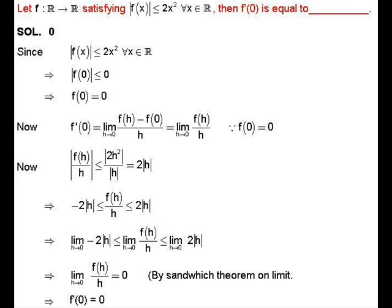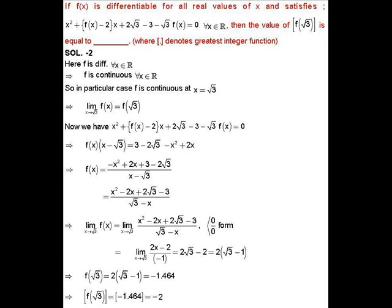This inequality means f(h)/h lies between -2|h| and 2|h|. By the sandwich theorem, lim_{h→0} f(h)/h = 0. Therefore, f'(0) = 0, so the answer is 0.